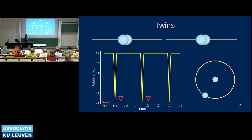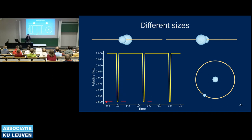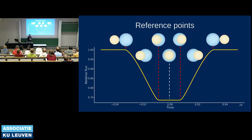For the full twin light curve we see a primary and secondary eclipse that look identical, with a characteristic triangular shape at the bottom reaching the half-flux level. When the stars have different sizes, two things change: the minimum flux level jumps up because the smaller star never fully covers the larger one, and the eclipses change from triangular to box-shaped, with a flat bottom.